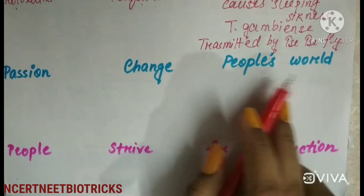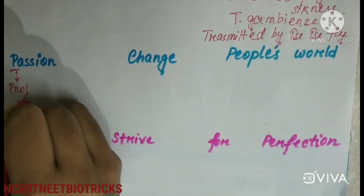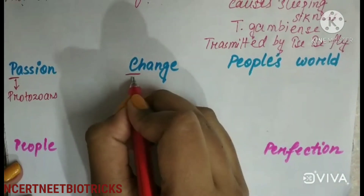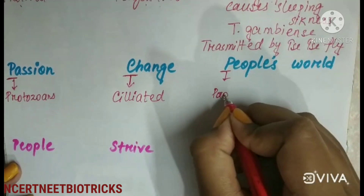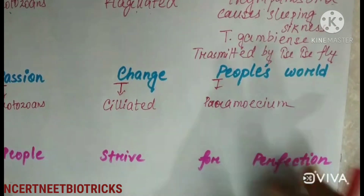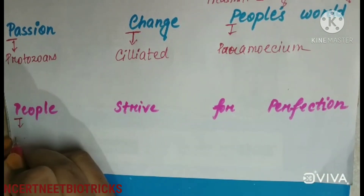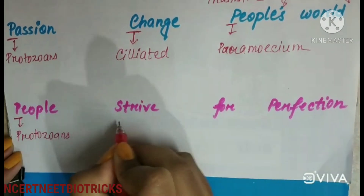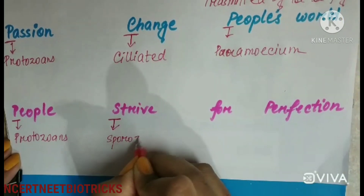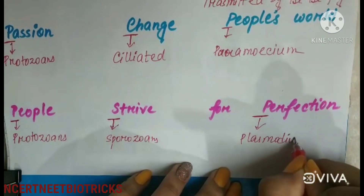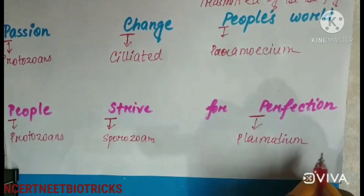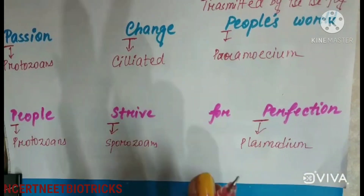The mnemonic 'passion changes people's world' — C for Ciliated Protozoans, example P for Paramecium. 'People strive for perfection' — S for Sporozoans, example P for Plasmodium. Plasmodium is the most notorious sporozoan and causes malaria. So we have all four classes of Protozoans with their examples.